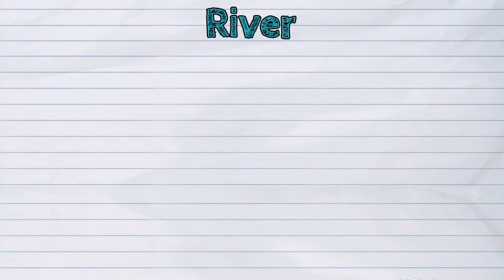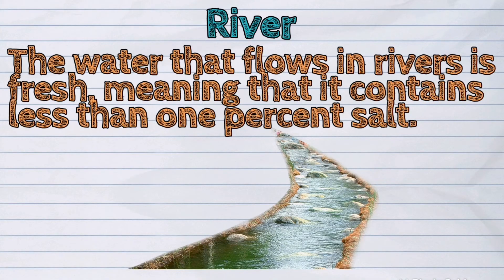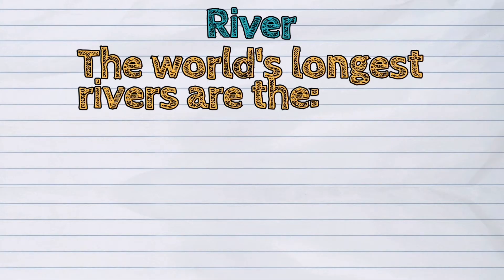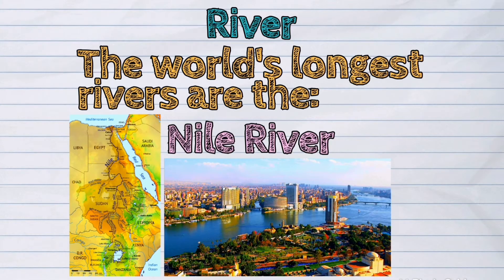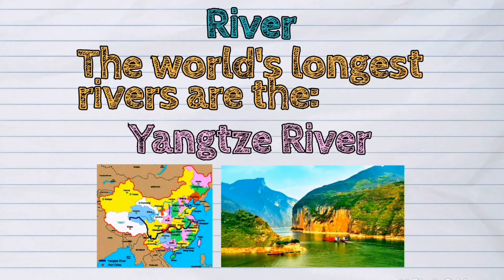A river is another type of water form. The water in a river flows downwards until it reaches the sea. The water that flows in rivers is fresh, meaning that it contains less than 1% salt. The world's longest rivers are the Nile River, Amazon River, and Yangtze River.